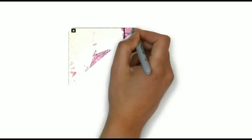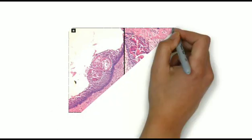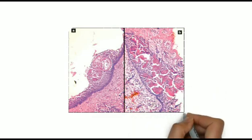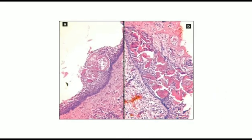The cyst lumen may be filled with fluid and cellular debris. On occasion, the lining epithelium may demonstrate linear or arch-shaped calcifications known as Rushton bodies.